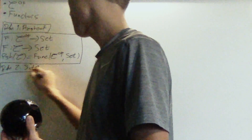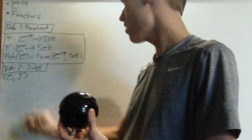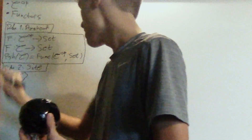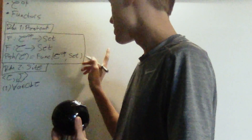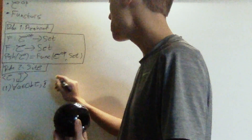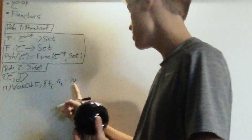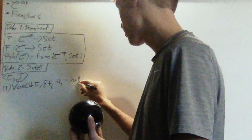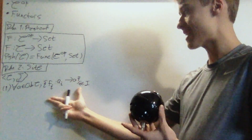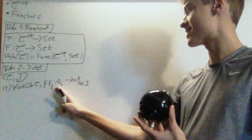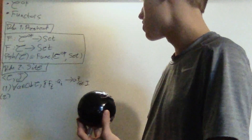A site is a pair: C, a category, and J, a coverage. A coverage is an assignment where we take every object A of C and assign it a covering family, which is just a collection of morphisms f_i going from an object A_i into the object A, for i an element of some index set. It's just some collection of indexed morphisms from indexed objects into the covered object.